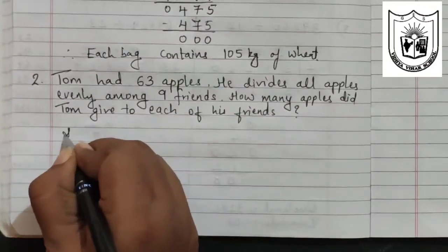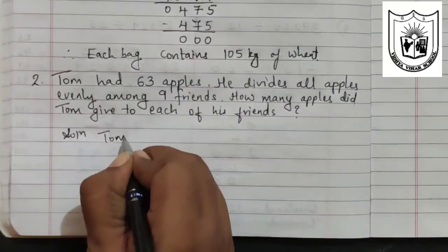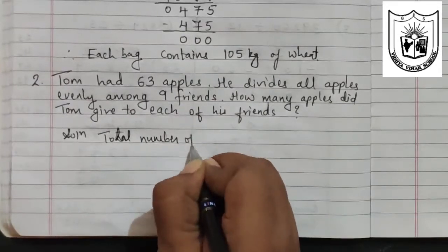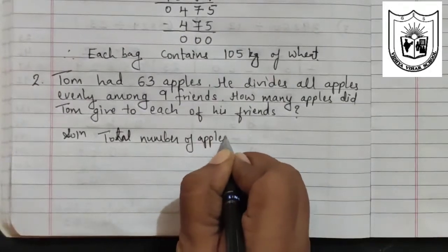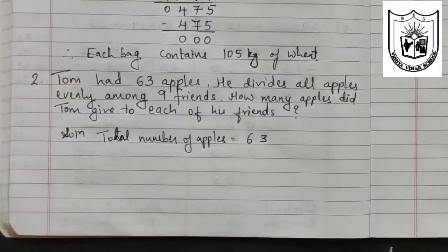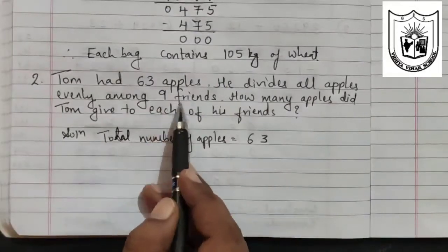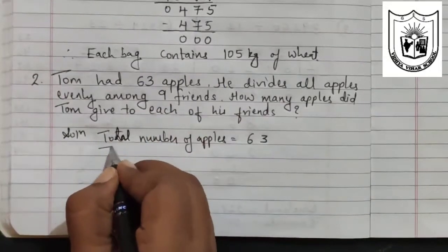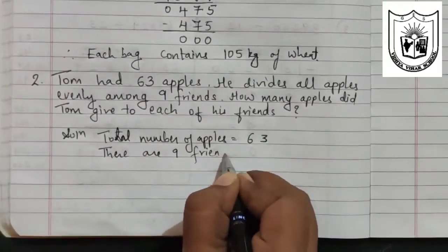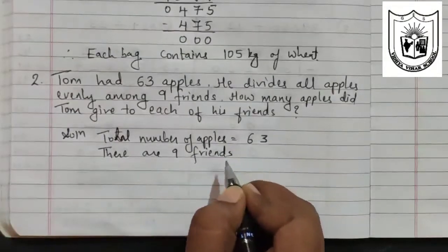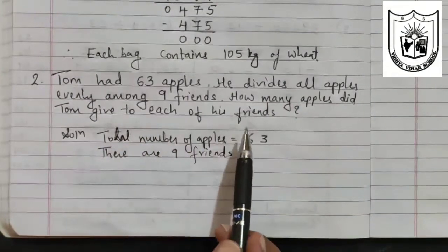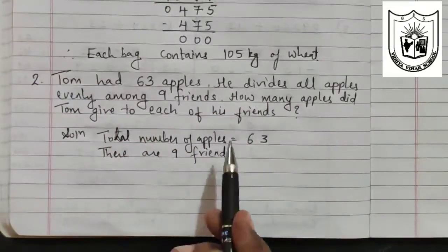Solution. Total number of apples. See here, what is the total number of apples Tom has? It is 63. And there are how many friends? Total number of friends are 9. So there are 9 friends among whom he has to divide the apples equally. So to find how many apples each friend will get, we will have to divide 63 by 9.